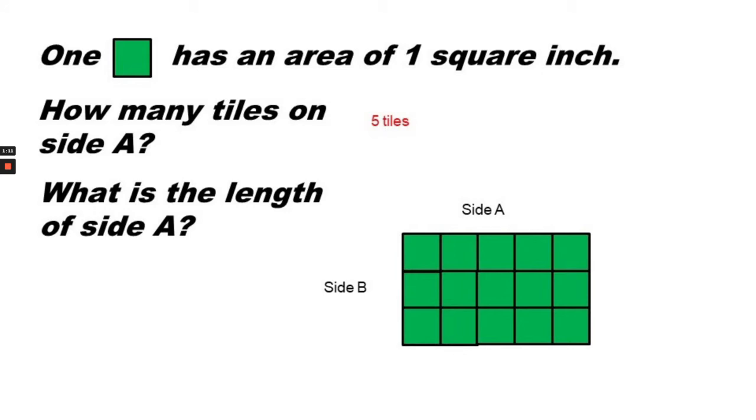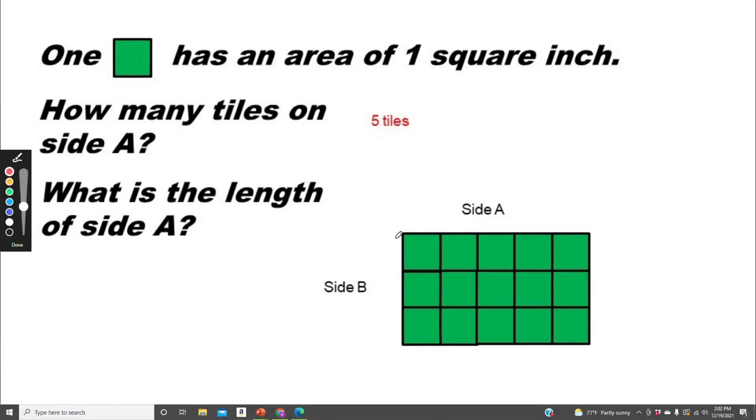So what is the length of side A? Well, we know that each square is one inch long by one inch wide. So there's one, two, three, four, five inches.